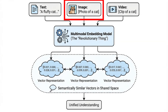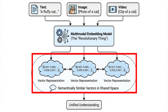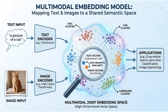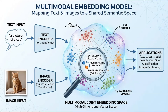The revolutionary thing with multimodal embeddings is that whether you pass in text, an image, or video, the model generates a vector representation that is semantically similar across modalities. Text about a cat, an image of a cat, and a video of a cat should all produce vectors close together. In the future this could even extend to audio, placing sounds in the same vector space as images and text.